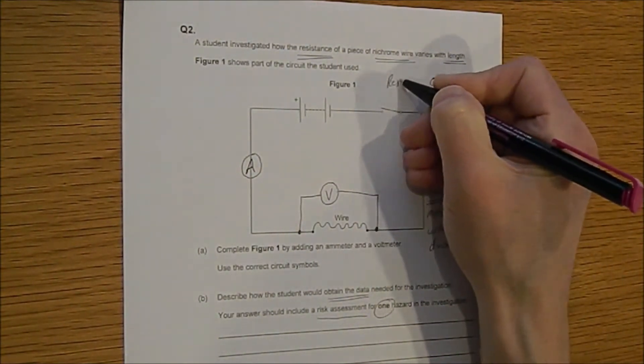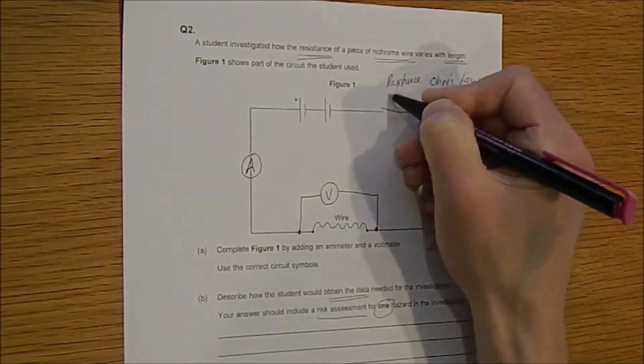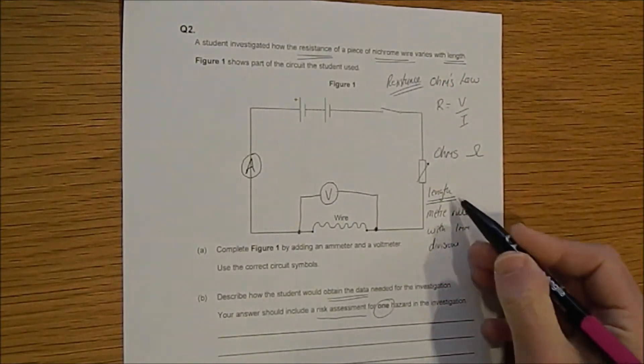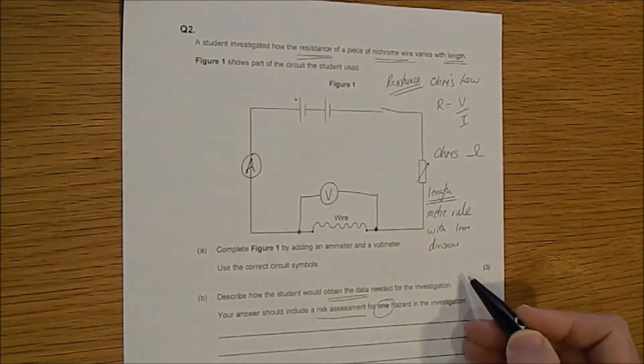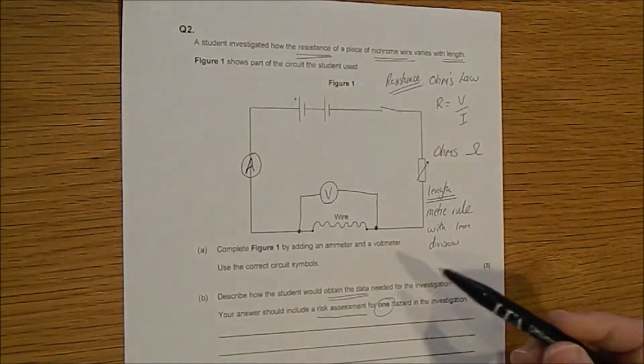And let's think about, let's just be as precise as we can. So let's say that's got one millimetre divisions. So this is all about resistance. Ohm's law, length, metre rule, one millimetre divisions. Well what else is there? That's the data.